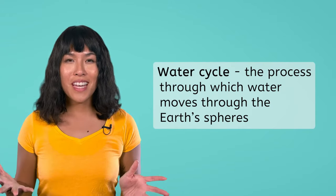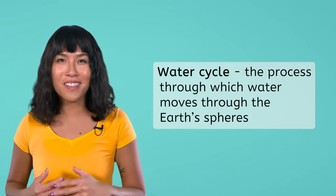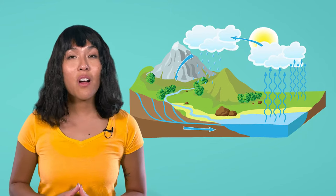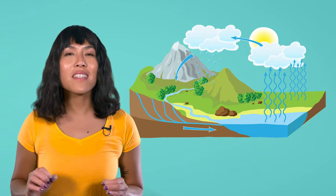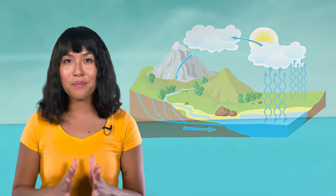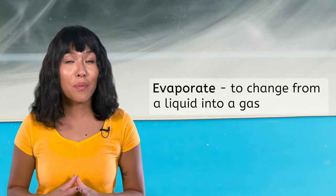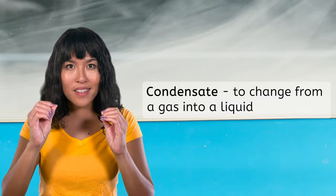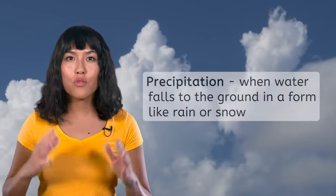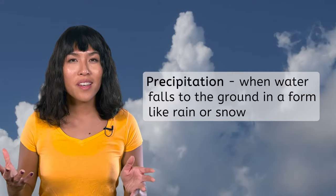The last cycle we'll look at in this lesson is the water cycle — the process through which water moves through the Earth's spheres. Like the other cycles we've covered, the water cycle involves both living and non-living things. When the water on Earth's surface warms up enough, it evaporates, or turns to water vapor in the atmosphere. Then, as it cools down, it condensates back into liquid droplets. This can happen on the ground as dew, on plants, or high in the atmosphere when water vapor condenses into clouds. When the water falls from these clouds in a form like rain or snow, it's called precipitation.